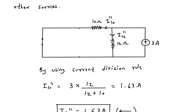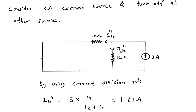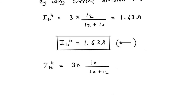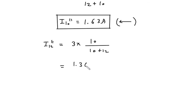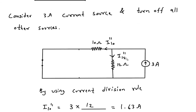Applying the current division rule for I12 double prime: I12 double prime equals 3 into 10 divided by (10 plus 12), giving 1.36 ampere. The direction for I12 double prime is downward.